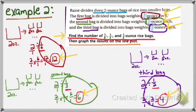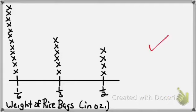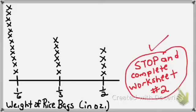The question told me to find the number of one-sixth, one-third, and one-half ounce rice bags — which I did — and to graph the results on a line plot — which I also did. I have fully answered all parts of this question. Please stop the video and complete worksheet number two right now.